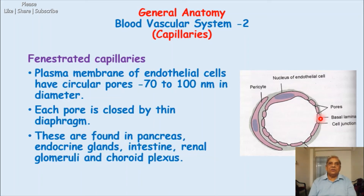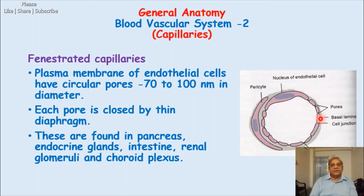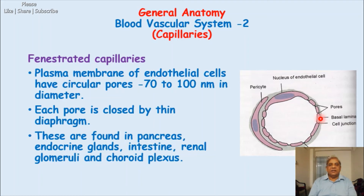Fenestrated capillaries are also found in the renal glomeruli — between the efferent and afferent arterioles — where rapid filtration of blood takes place. The filtrate then passes into Bowman's capsule, then to the proximal convoluted tubule, loop of Henle, and distal convoluted tubule. They are also found in the choroid plexus, a capillary plexus responsible for formation of cerebrospinal fluid.